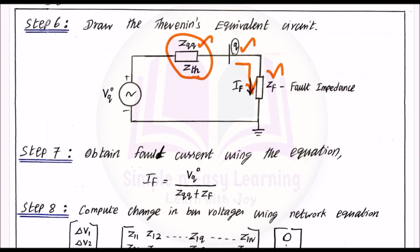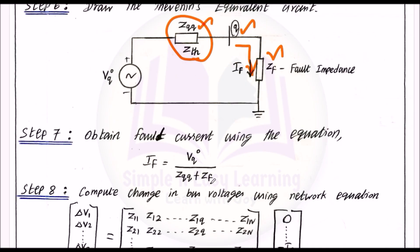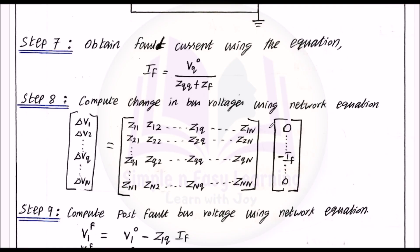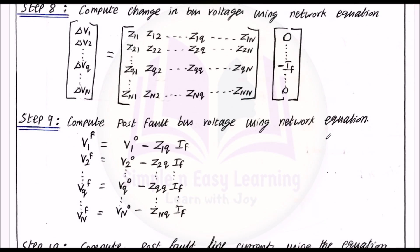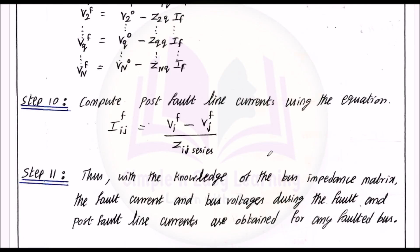Step 7 — obtain fault current using the equation: If = Vq0 divided by (Zqq + Zf). Step 8 — compute change in bus voltages using network equations ΔV1, ΔV2, up to ΔVn. Step 9 — compute post-fault bus voltages using the same network equation seen in the flowchart. Step 10 — compute post-fault line current using Iij = (Vi minus Vj) divided by Zij series. Step 11 — with knowledge of the Z bus matrix, the fault current, bus voltages during fault, and post-fault line currents are obtained for any faulted bus.